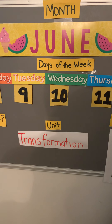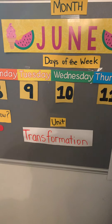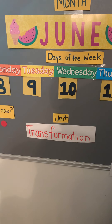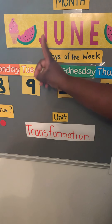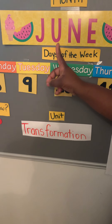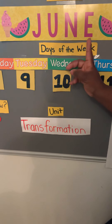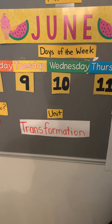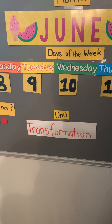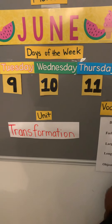We are in the month of June. You guys should be able to spell June yourselves — let's spell it. I'm not gonna help you, you do it by yourself. Here we go. Got it — June, right!